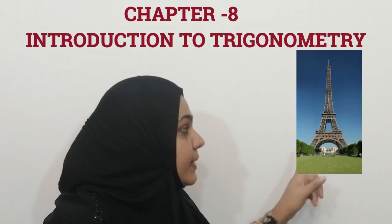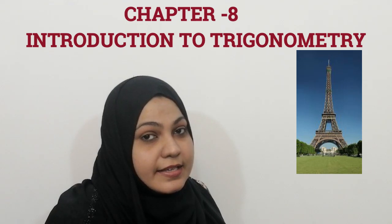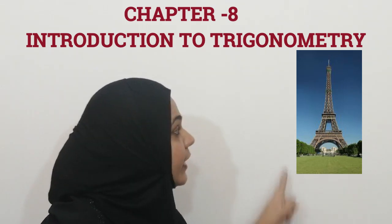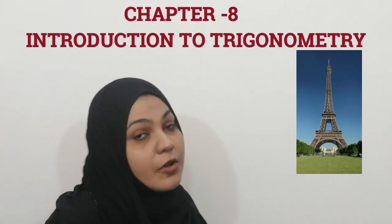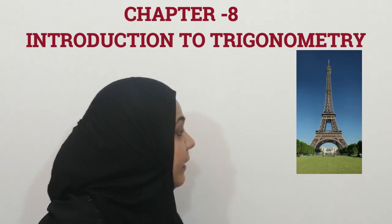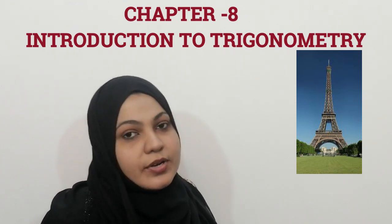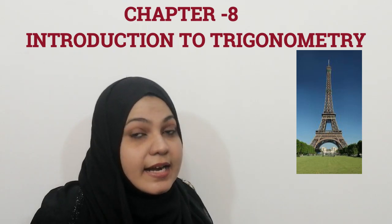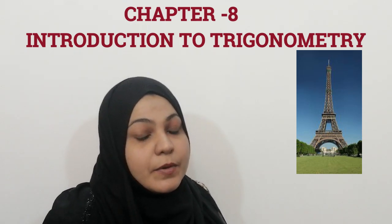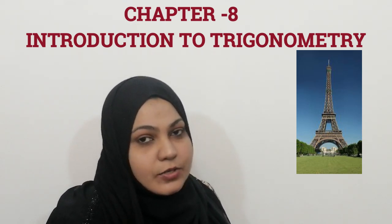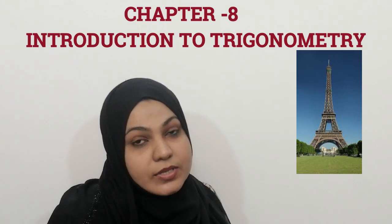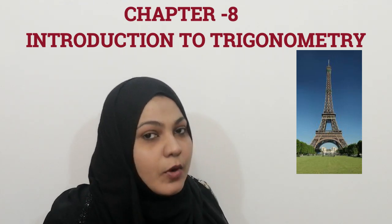Now I am showing a picture. Can you identify this? Yes, you are right — this is the Eiffel Tower. If I ask you to find the height of this tower, how will you find it? You might say we will go to the top and measure it using a measuring tape. Actually, is it easy? No, it is not easy. It was done hundreds of years back — people used to do it like this. Now it is not required because trigonometry is solving our problems.